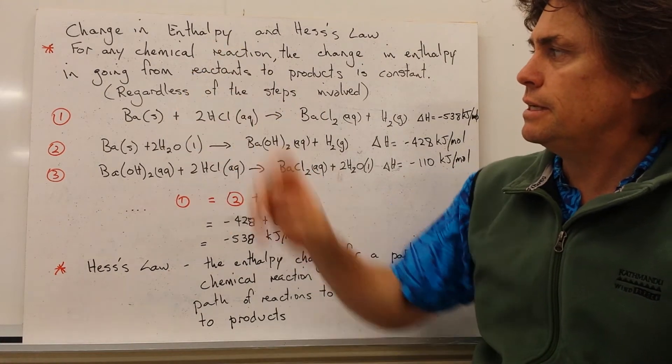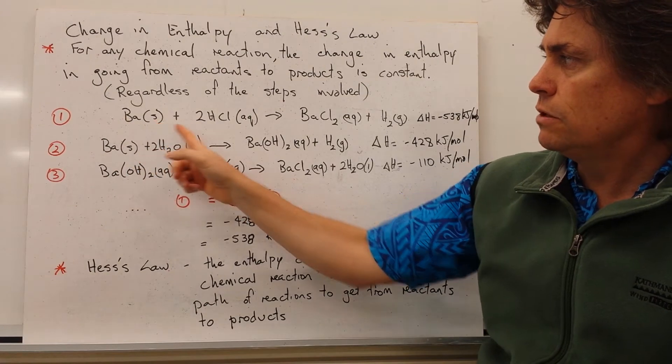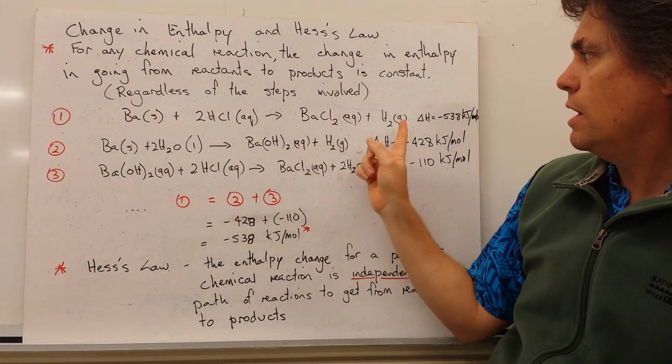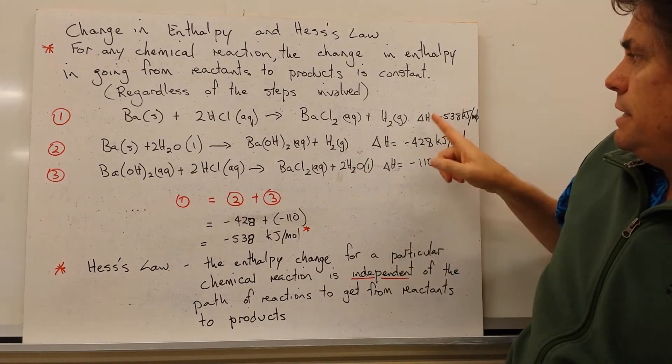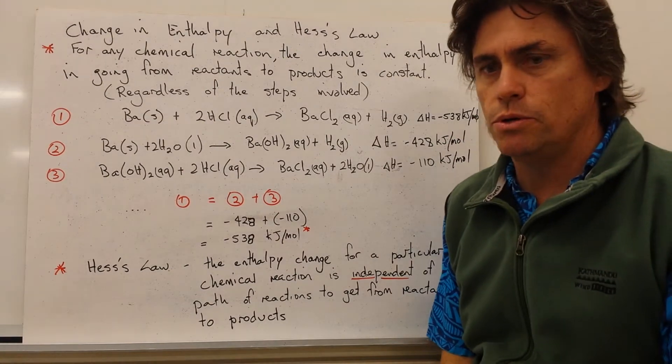Let's look at this statement in an example. So our first reaction, we've got barium in a solid form reacting with hydrochloric acid to give us barium chloride and hydrogen gas. And this has a change in enthalpy value for this reaction, minus 538 kilojoules per mole.